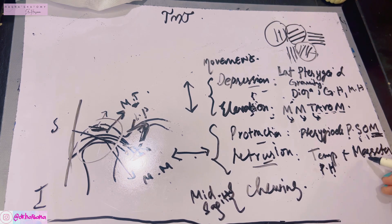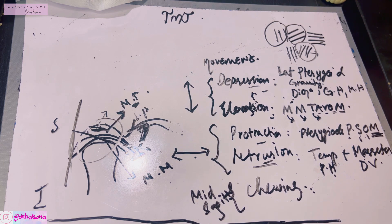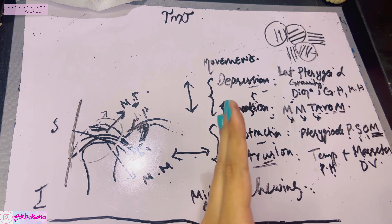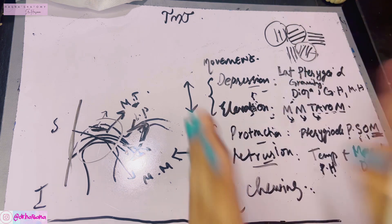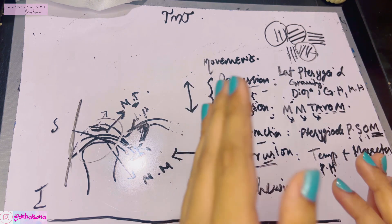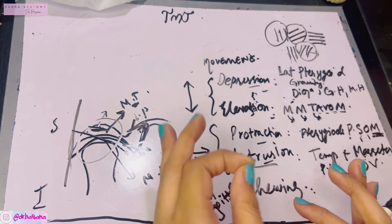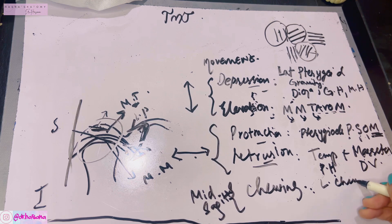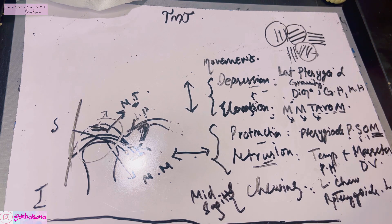Chewing movements are produced by a combination of these muscles. For example, chewing on the left side involves the right pterygoids, along with the ipsilateral (left) temporalis anterior fibers and the left masseter deep fibers.